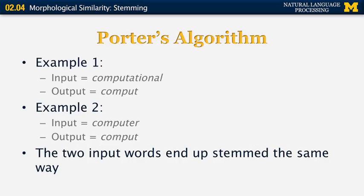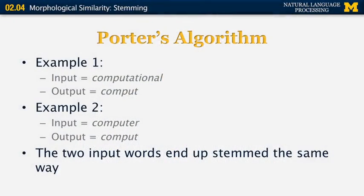Let's look at a few examples of Porter's algorithm. The first example starts with 'computational' and produces as output the word 'comput' (C-O-M-P-U-T), which is not a real word but is the stem of 'computational'. We also want to take the word 'computer' and produce the same stem 'comput'. So at the end of the day, 'computational' and 'computer' will be stemmed exactly the same way, and their similarity in the stem space will be perfect.